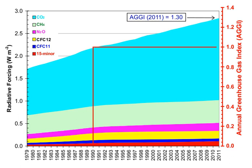The atmospheric lifetime of a species measures the time required to restore equilibrium following a sudden increase or decrease in its concentration in the atmosphere. Individual atoms or molecules may be lost or deposited to sinks such as the soil, the oceans and other waters, or vegetation and other biological systems, reducing the excess to background concentrations. The average time taken to achieve this is the mean lifetime.